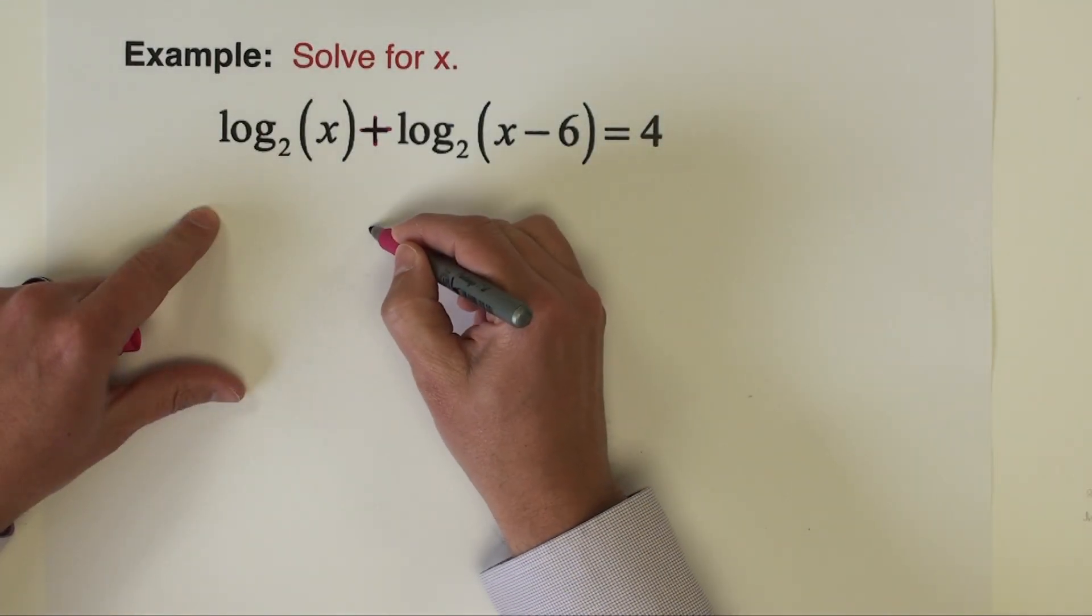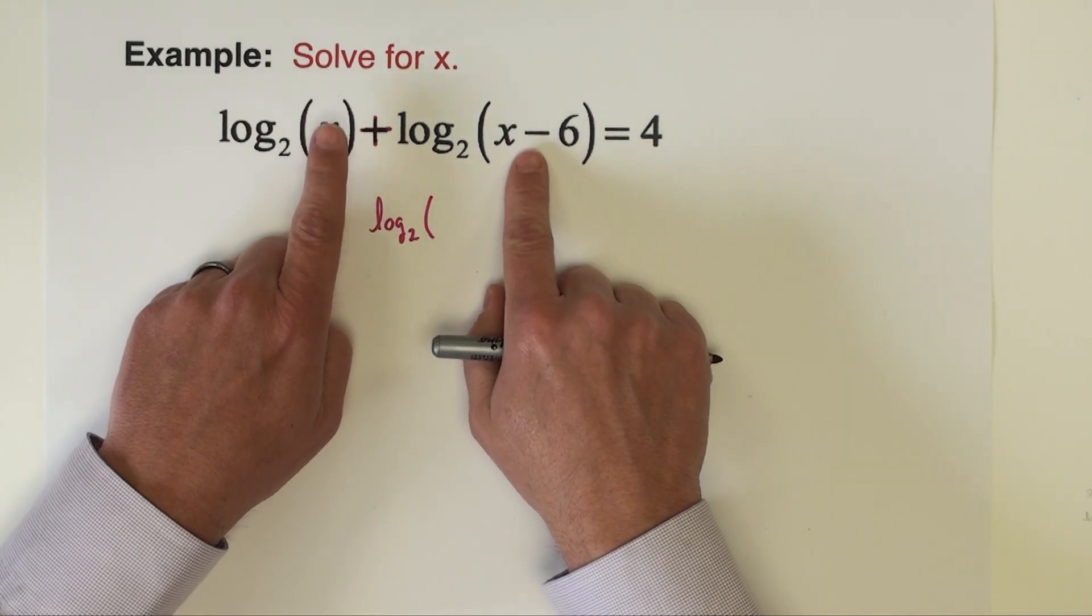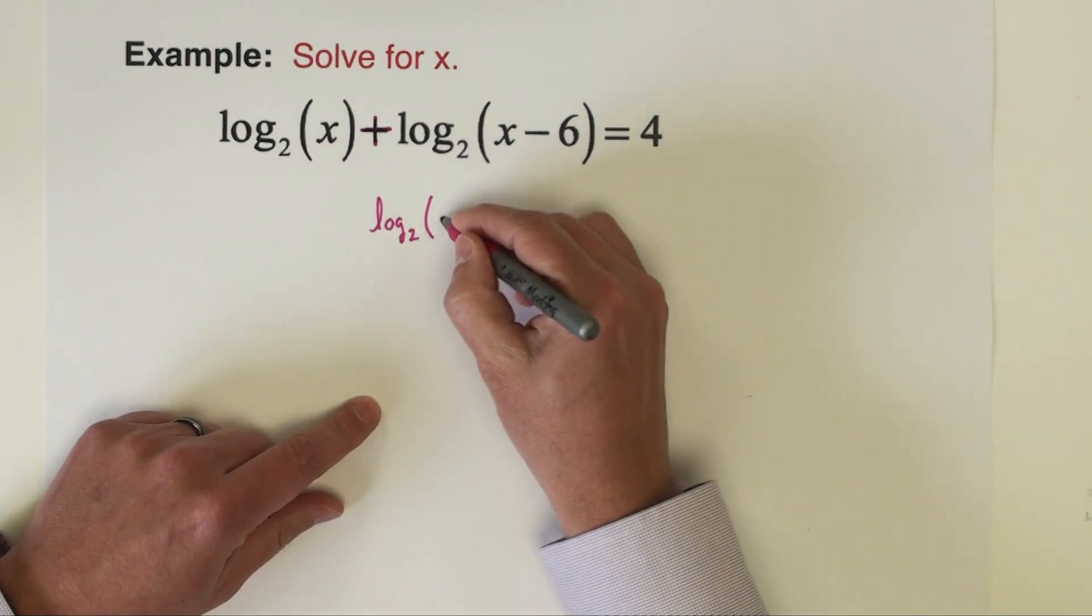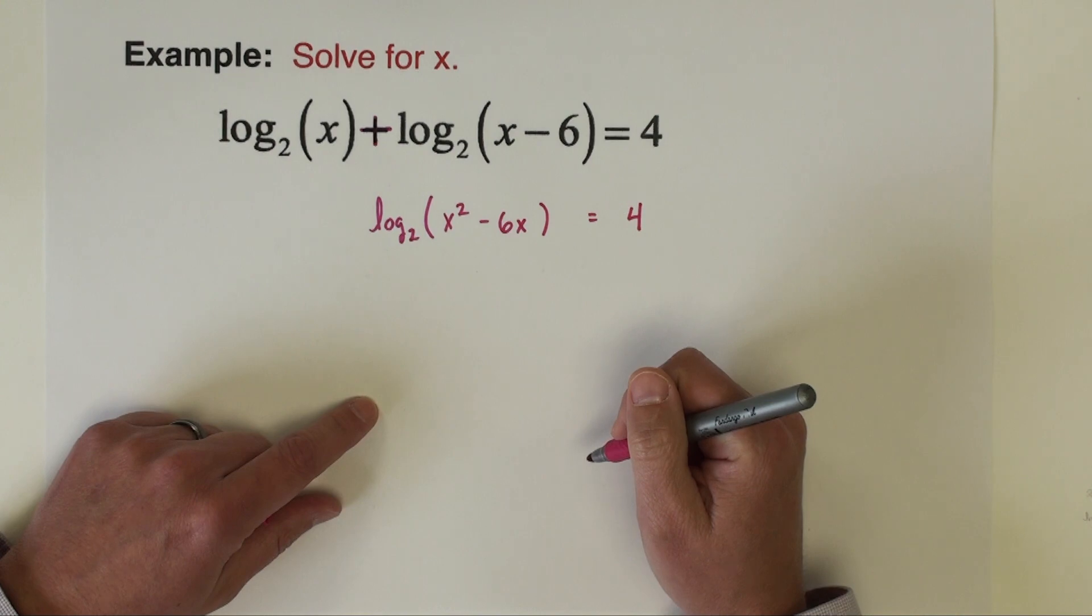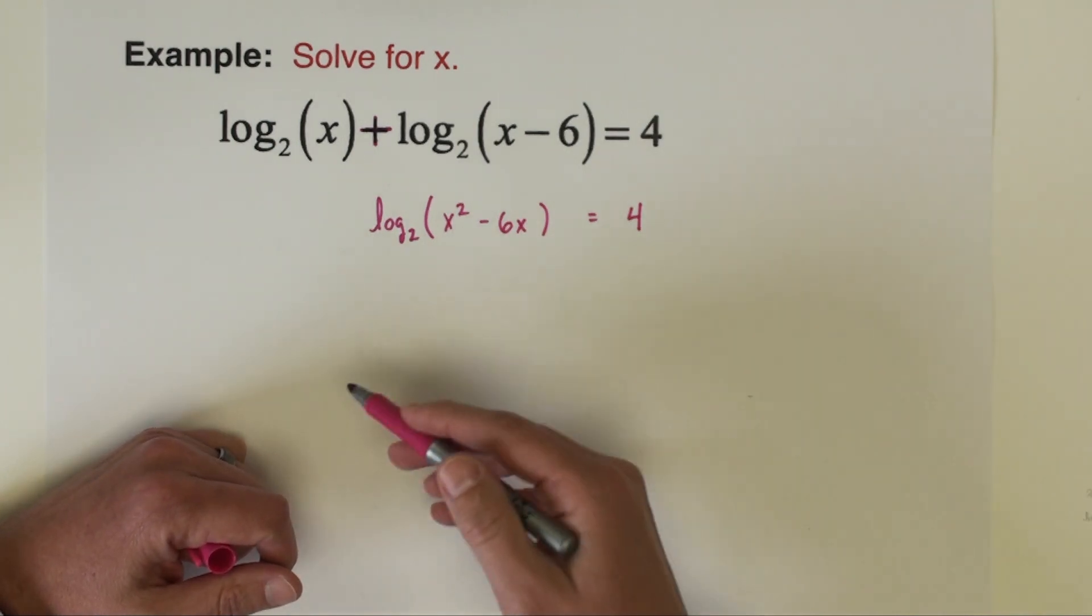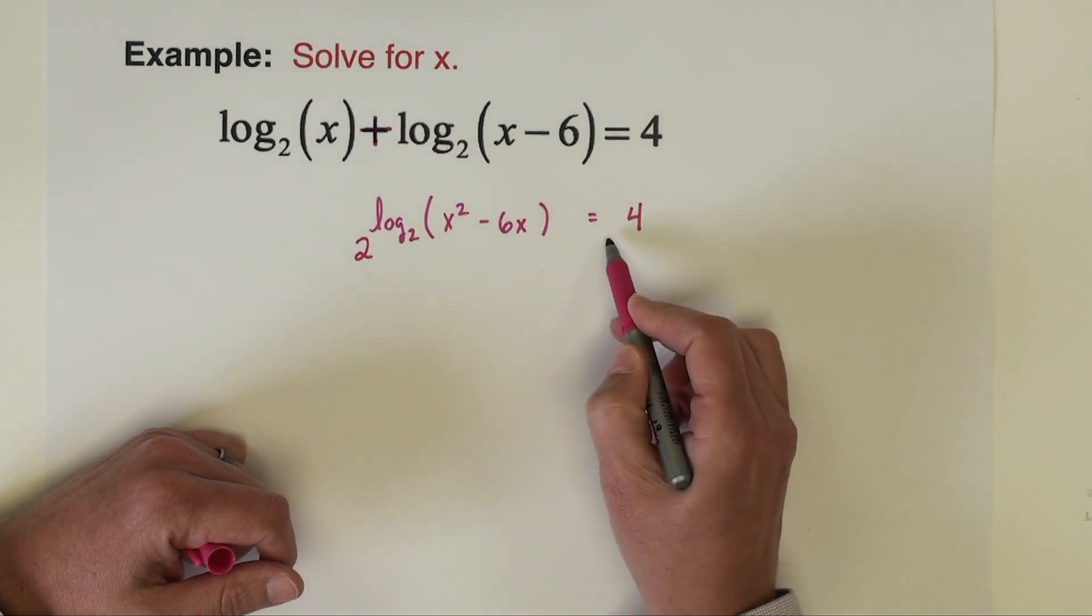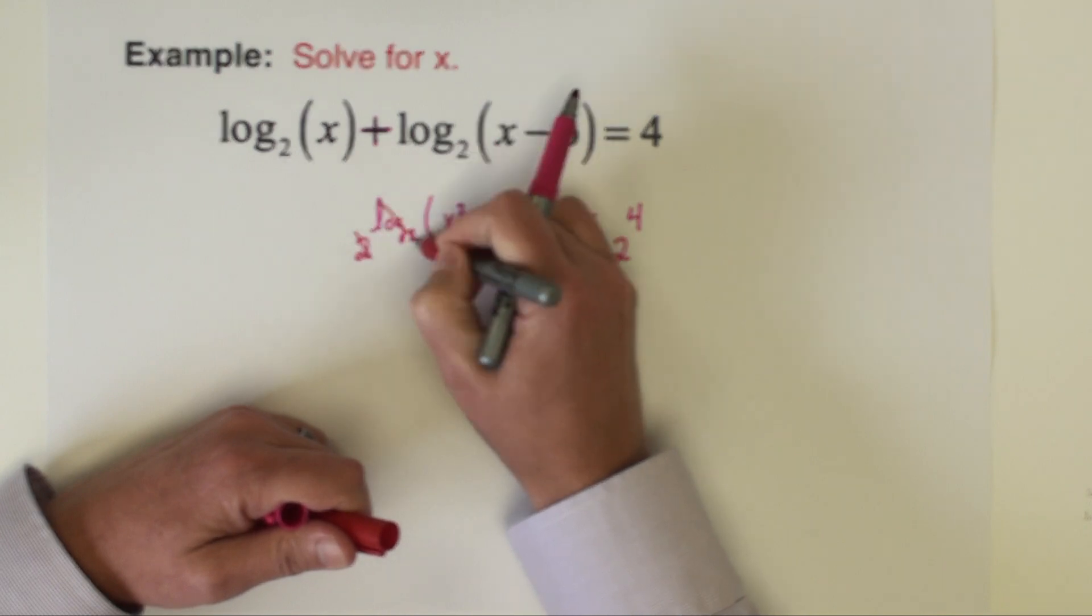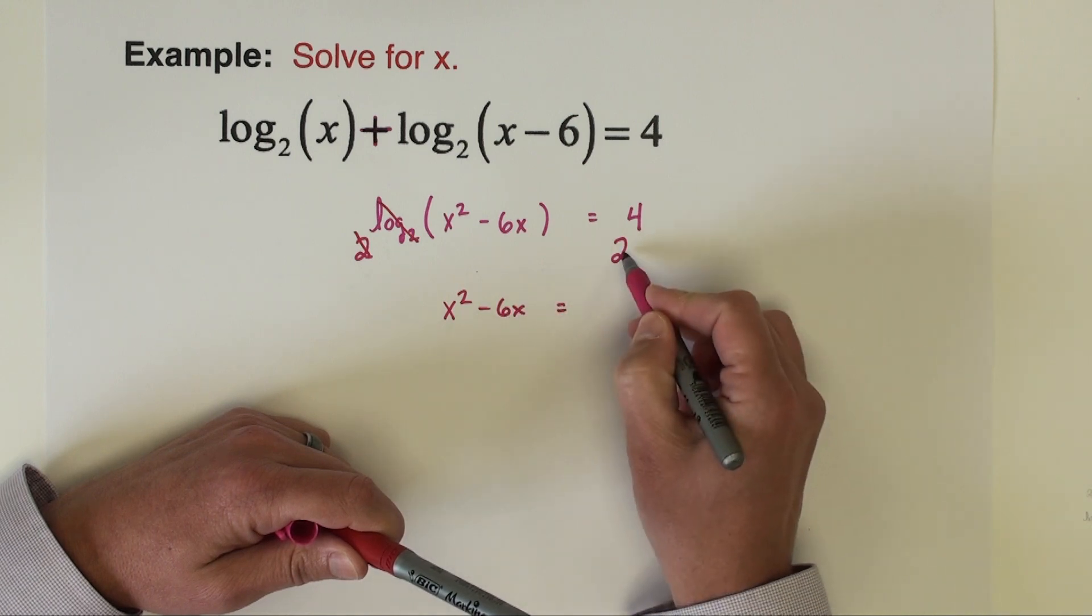These two logarithms are being added together, and when logarithms are added, we multiply the quantities inside. I'm going to rewrite this as log base 2 of x times x minus 6. When I multiply x times x minus 6, I distribute x to both terms: x squared minus 6x. That equals 4. Now at this point we can exponentiate both sides. I'm going to place a 2 underneath each side as exponents, and the 2 and log base 2 cancel. We have x squared minus 6x equals 2 to the fourth power, which is 16.